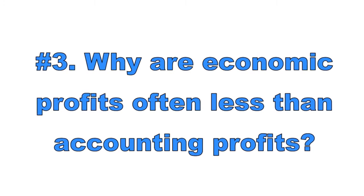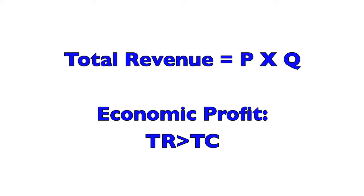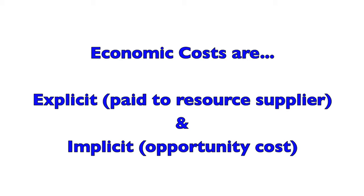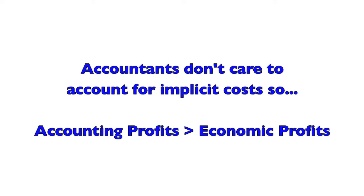Number three: why are economic profits often less than accounting profits? An economic profit occurs when a firm's total revenue — price times quantity — exceeds its total economic costs. From an economic standpoint, costs are explicit, which are paid out to a resource supplier, and implicit, which is an opportunity cost not paid out to a resource supplier. An accounting profit does not take into account implicit costs, so accounting profits will exceed economic profits when an opportunity cost is present. For example, if a firm is breaking even and earning zero economic profit, or a normal profit, accounting profits can be positive.